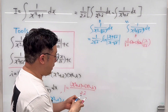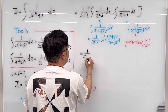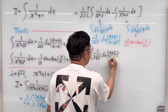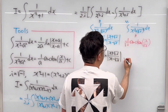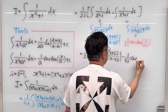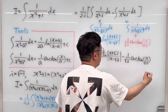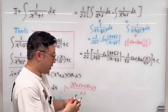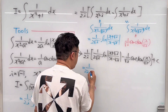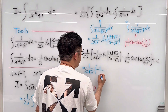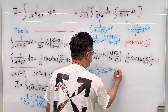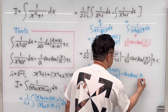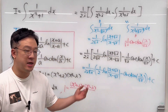Now let's put all of these together. We have 1/(2i) times: 1 over 2√i times ln[(x + √i)/(x − √i)], minus 1/√i times arctan(x/√i). Factoring out 1/√i, the final answer is 1 over (2i√i), times the quantity: 1/2 · ln[(x + √i)/(x − √i)] minus arctan(x/√i), plus C. This is the complex solution for this integral.